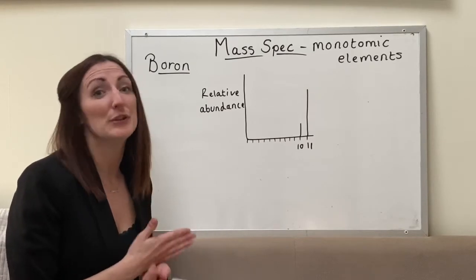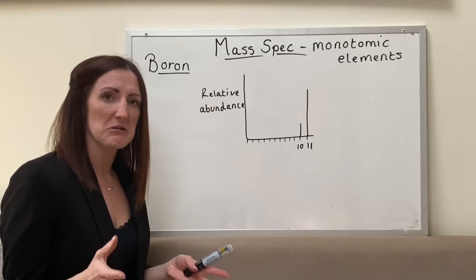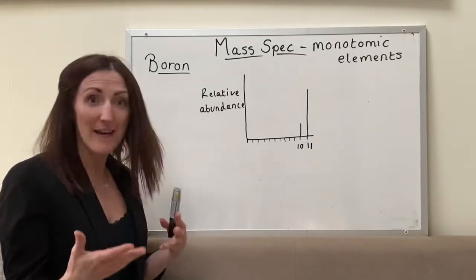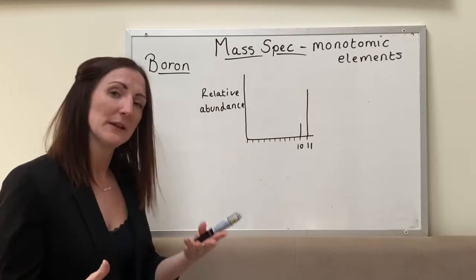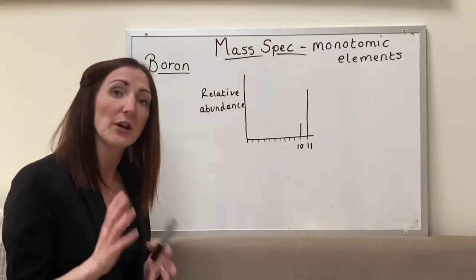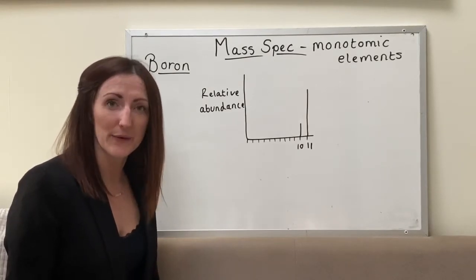So this is what the mass spec is able to do for us, it's able to work out how much of it weighs what, so for boron how much of it does weigh 10, how much of it does weigh 11. If we know that information we can then do a really simple calculation where you can calculate the relative atomic mass of that element.